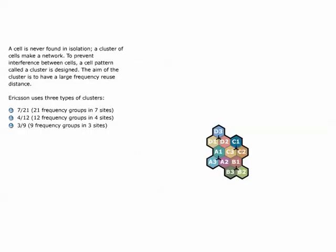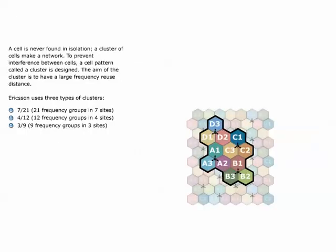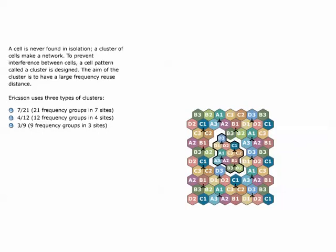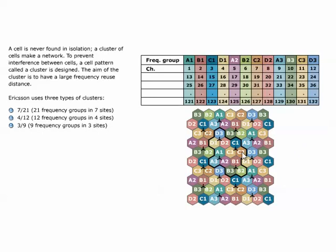A cell is never found in isolation. A cluster of cells makes a network. To prevent interference between cells, a cell pattern called a cluster is designed. The aim of the cluster is to have a large frequency reuse distance. Ericsson uses three types of clusters. The aim of the cell planning process is to provide maximum capacity with least interference. The cell pattern and frequency plan should be designed not only for the initial network but also for gradual growth phases.